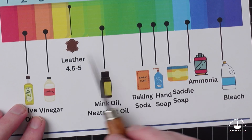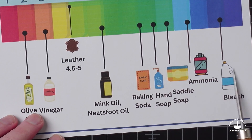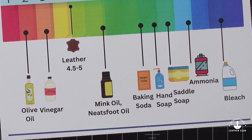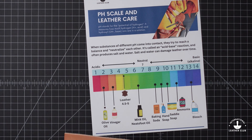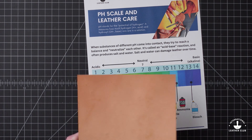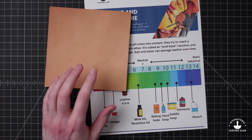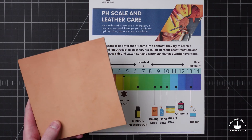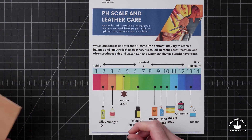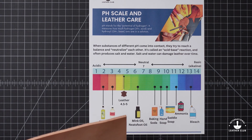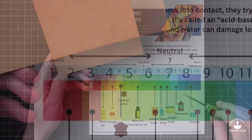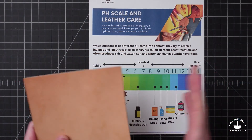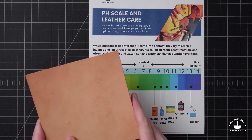That's important because it's why using something like bleach is going to be way worse than using something like baking soda, even if both may not be great. Leather has a pH of around 4.5 to 5, and that's going to be its sweet spot where it feels comfortable — anything above or below may affect it. So when looking at cleaners and conditioners, we want to find something that is either neutral or around that 4.5 to 5, so when they combine it won't create that salt and water that starts to break down the fibers.